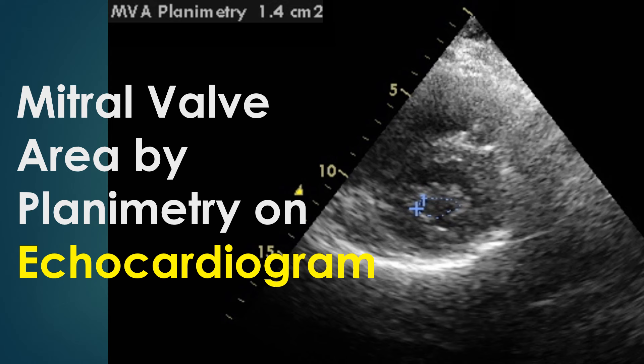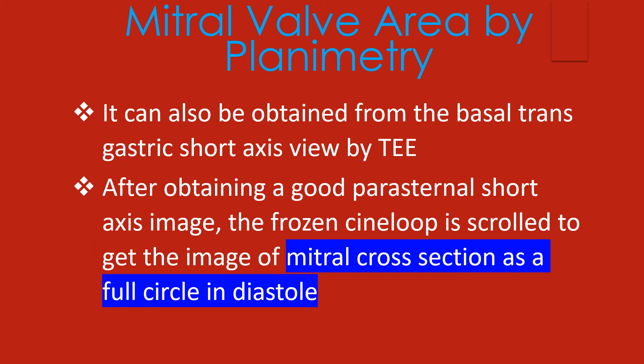Mitral valve area by planimetry on echocardiogram is usually obtained from the parasternal short axis view. It can also be obtained from the basal transgastric short axis view by transesophageal echocardiography.